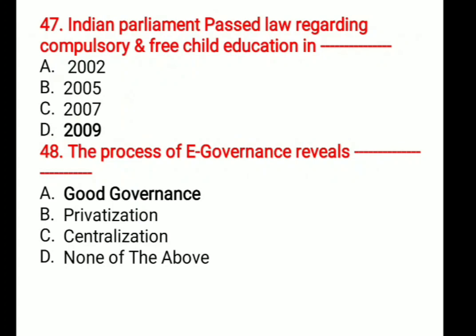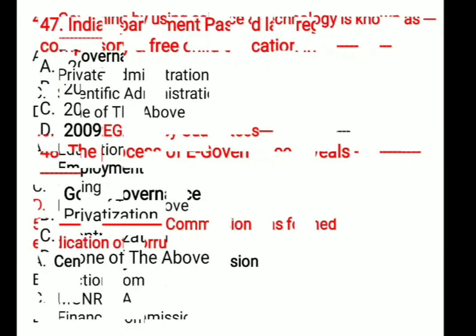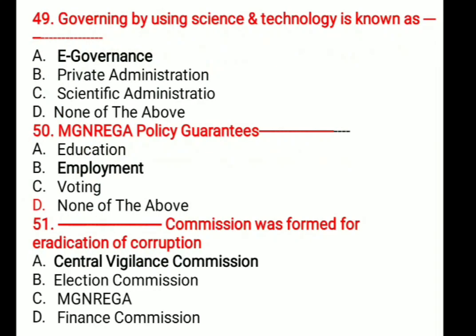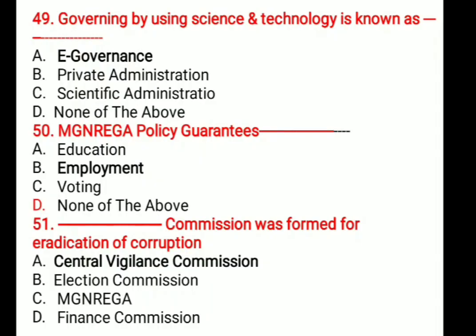Question number 48: The process of e-governance reveals blank. Options: A. Good Governance, B. Privatization, C. Centralization, D. None of the above. The correct answer is Good Governance. Question number 49: Governing by using science and technology is known as blank. Options: A. E-governance, B. Private administration, C. Scientific administration, D. None of the above. The correct answer is e-governance. Question number 50: MGNREGA policy guarantees blank. Options: Education, Employment, None of the above. The correct answer is employment. Question number 51: Blank commission was formed for eradication of corruption. Options: A. Central Vigilance Commission, B. Election Commission, C. MGNREGA, D. Finance Commission. The correct answer is Central Vigilance Commission.